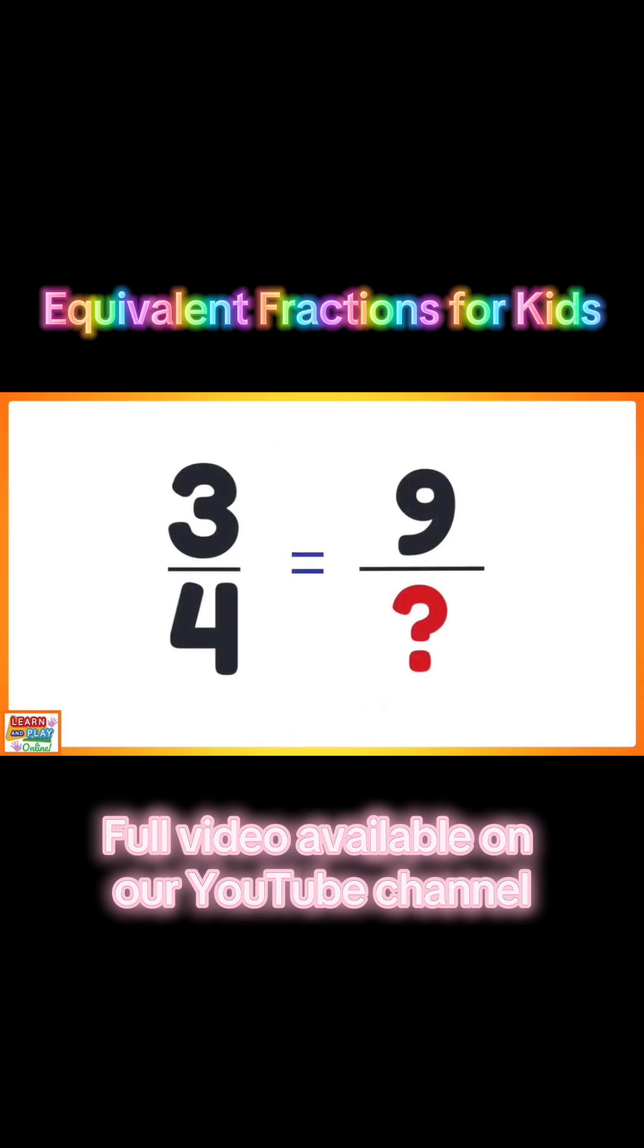This time you will find another equivalent fraction for 3 quarters, but the numerator has already been given to you, and it is 9. Your job is to find out what the denominator should be.